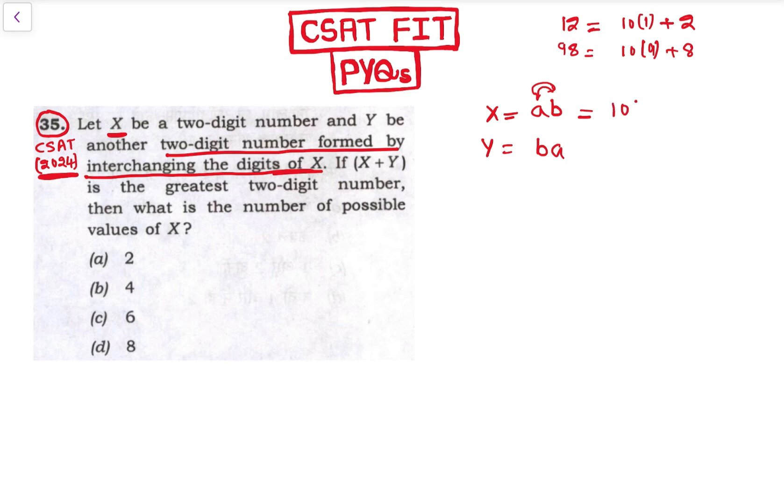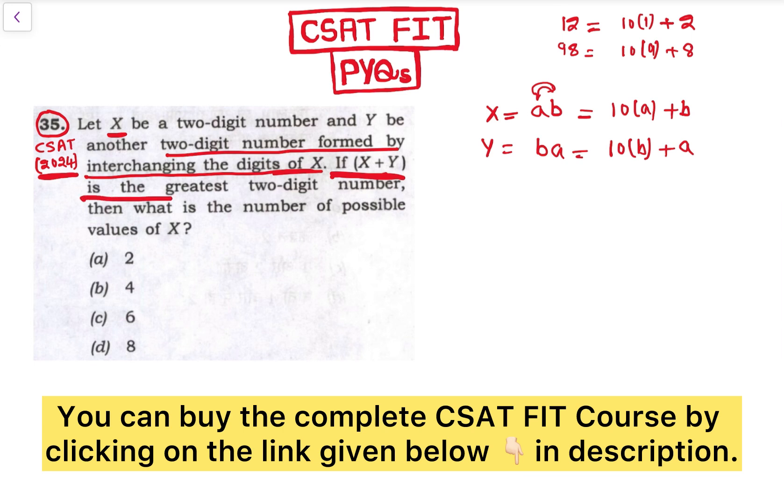And ba can be written as 10 into b plus a. We are given: if X plus Y is the greatest two-digit number, so greatest two-digit number is what? 99 is the greatest two-digit number.